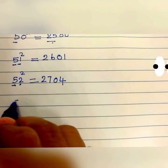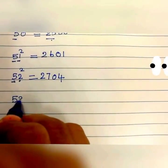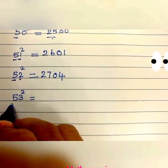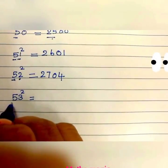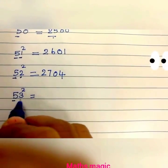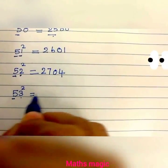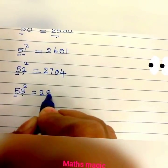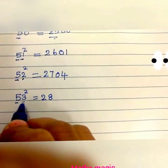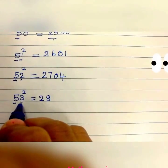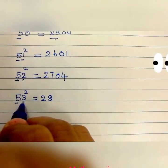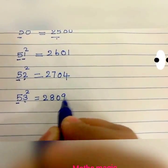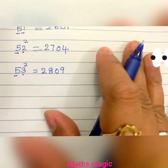53 squared: 5 times 5 is 25, plus 3 is 28. And 3 squared is 9, written as a 2-digit number: 09. So 53 squared is 2809.